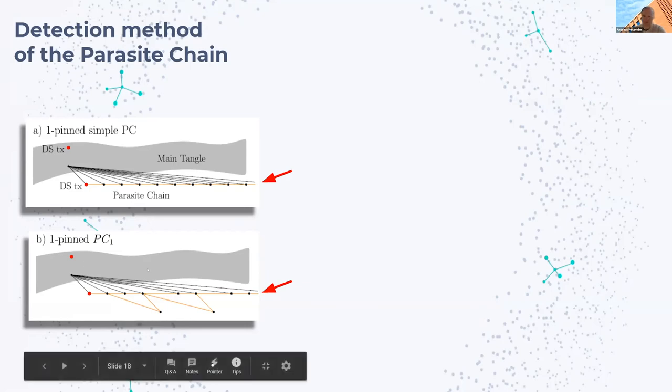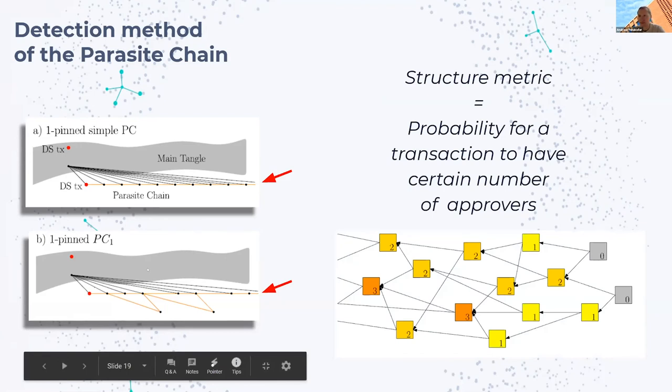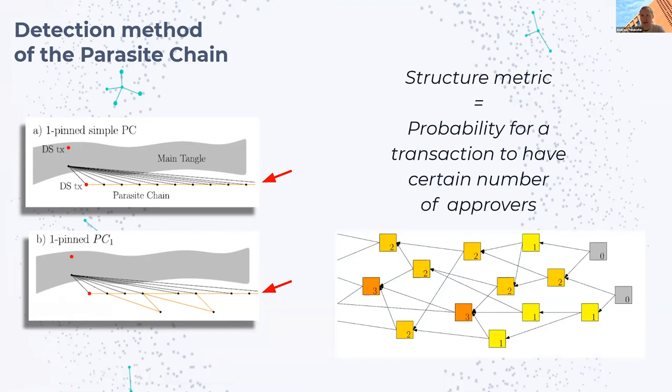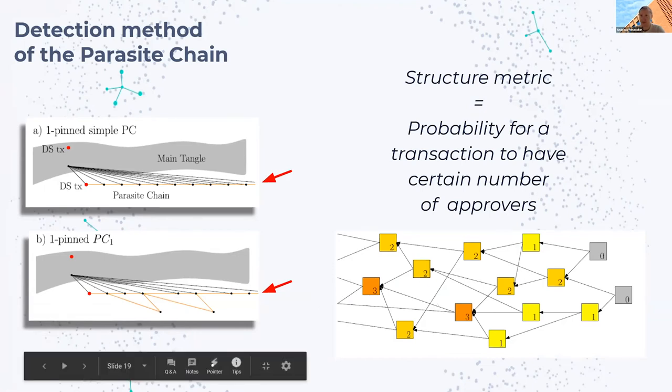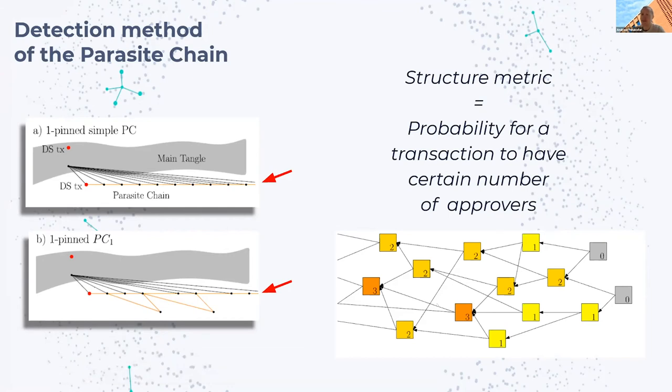This is very different to the main Tangle where you can actually have transactions that have a very high number of approvers. So what we can do is create a metric that measures how likely it is that a transaction has a given number of approvers. We can create a distance metric that measures how distant this walk is from a walk we perform in the main Tangle.